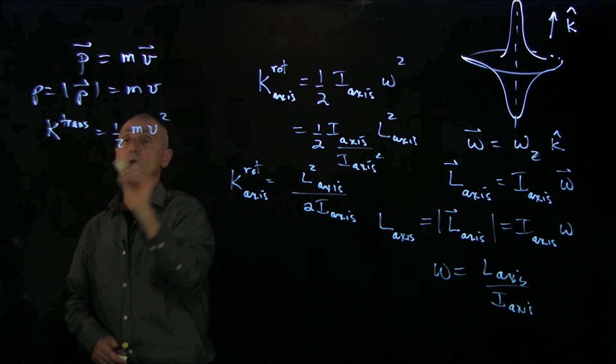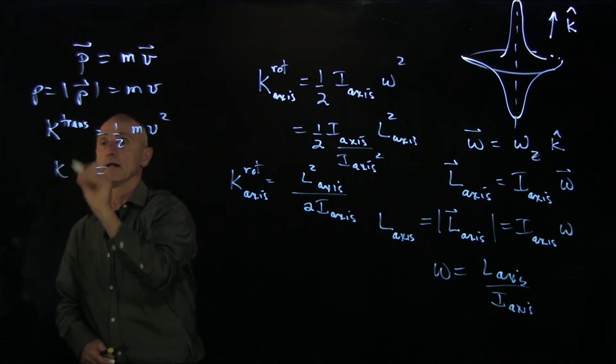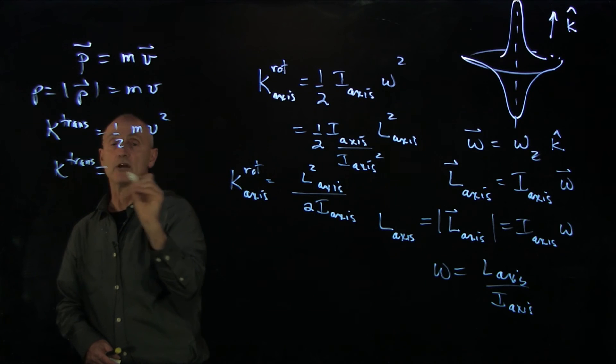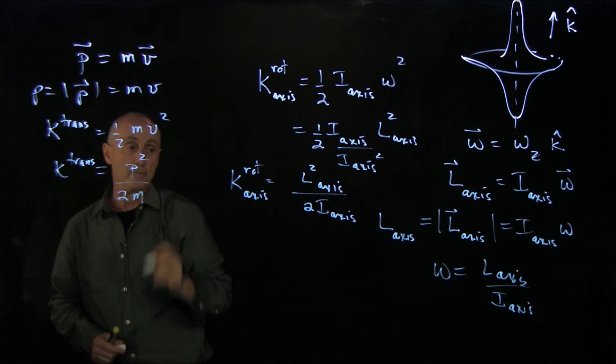we can write that as a translational kinetic energy as p squared over 2m.